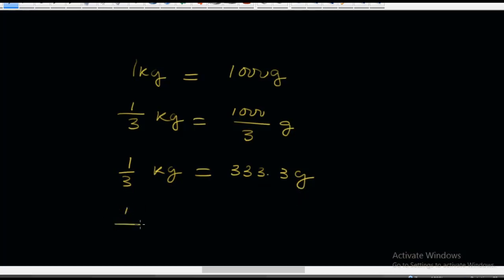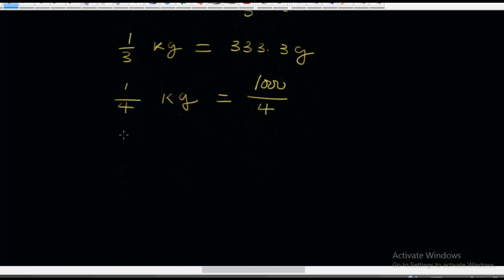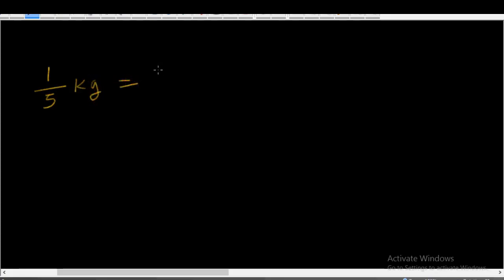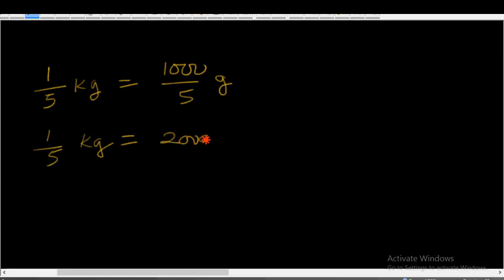What about one over four kg? That is the same as 1000 over four, which equals 250 grams. So one-quarter of a kilogram is 250 grams. And if we divide by five: one over five kg equals 1000 over five, which gives you 200 grams. So one-fifth of a kilogram is equal to 200 grams.